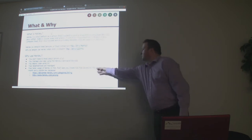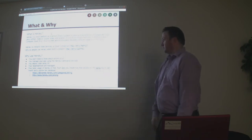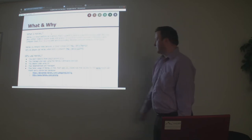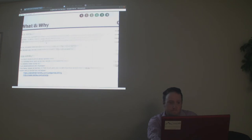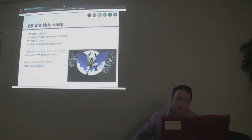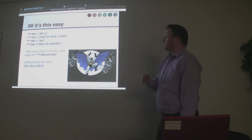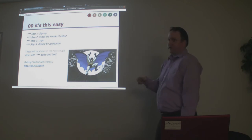750 dynos per month free, and you get a starter Postgres database. You can use add-ons and connect other databases too. Pretty much the first two steps — sign up and install the toolbelt — you only do once. You log in, and then you deploy your app. That's it.